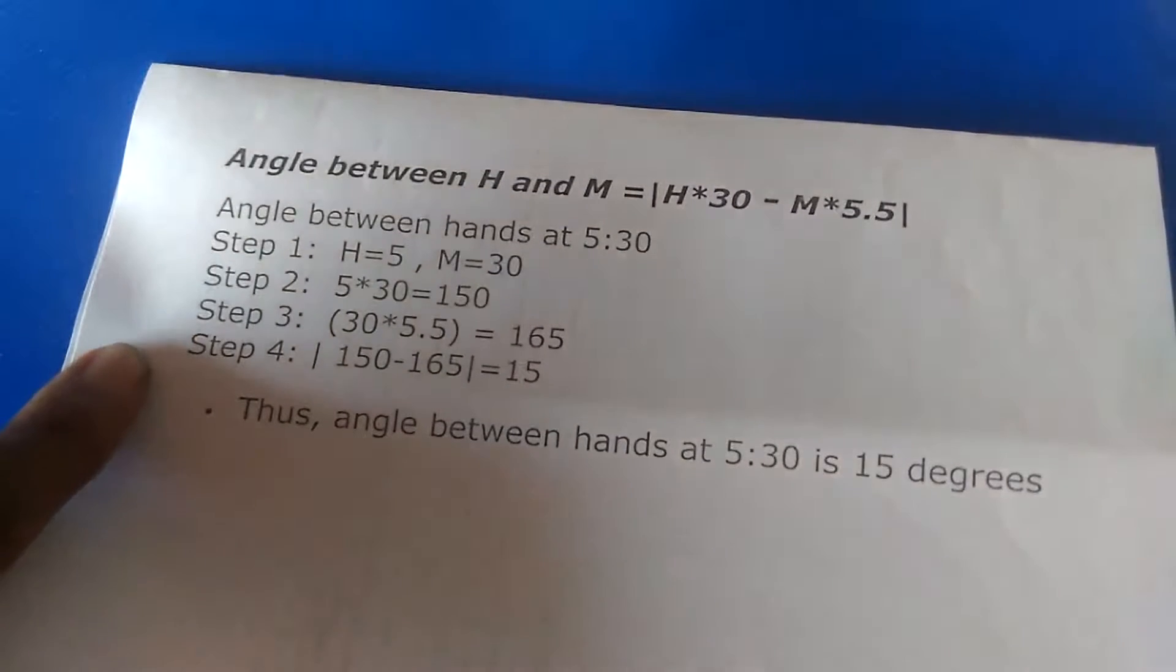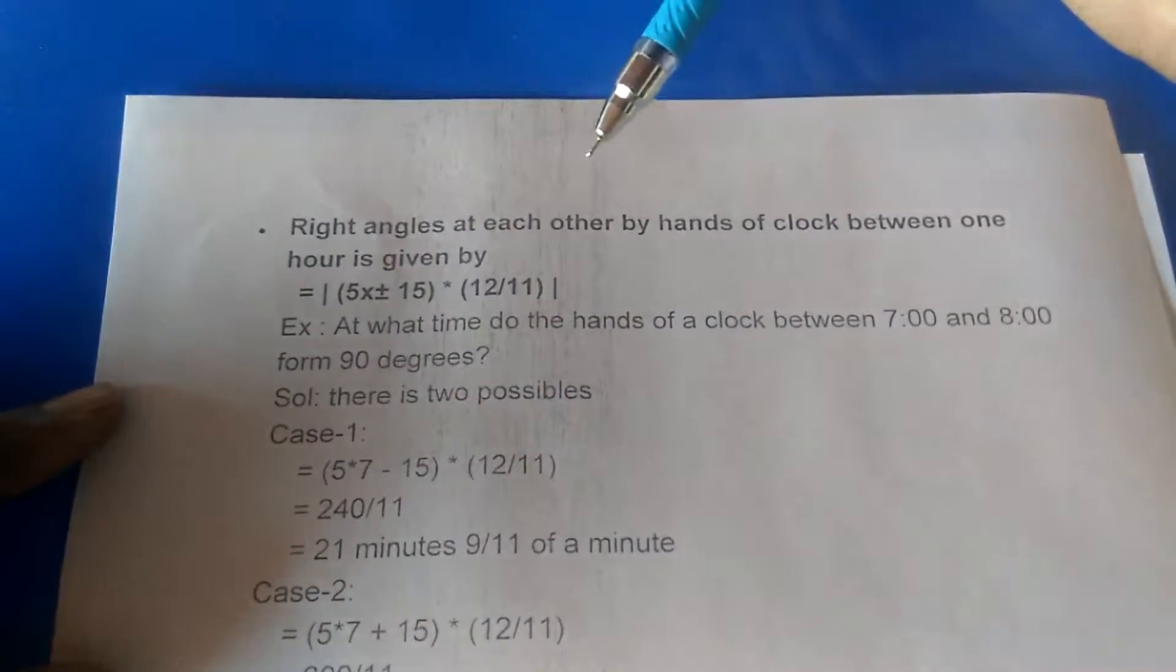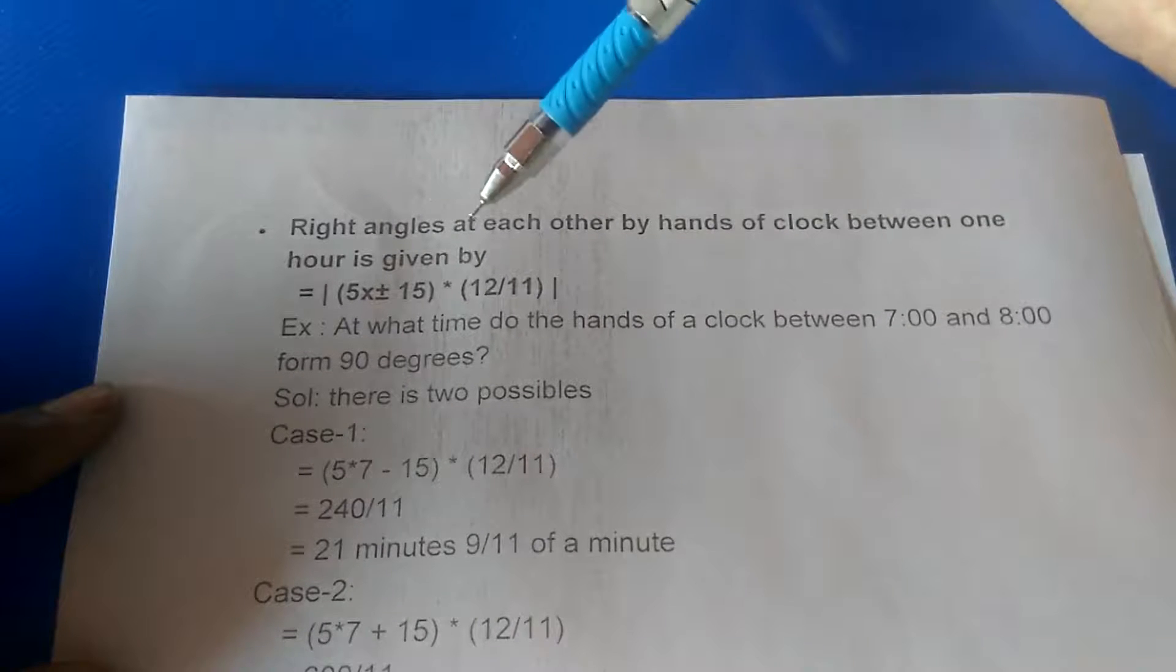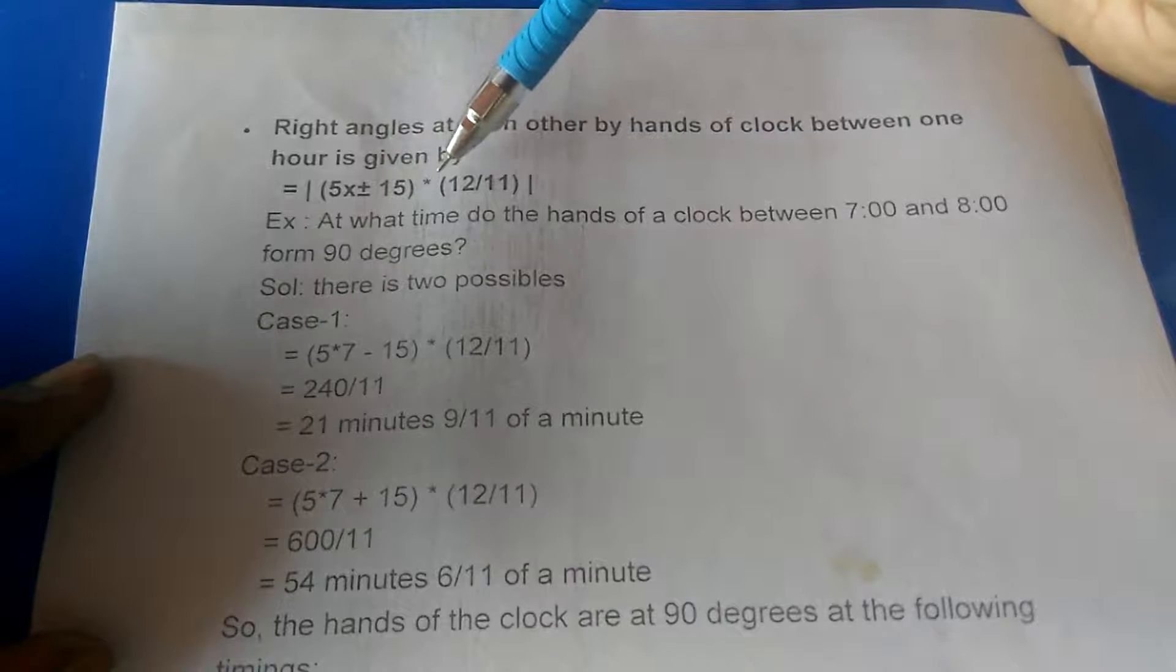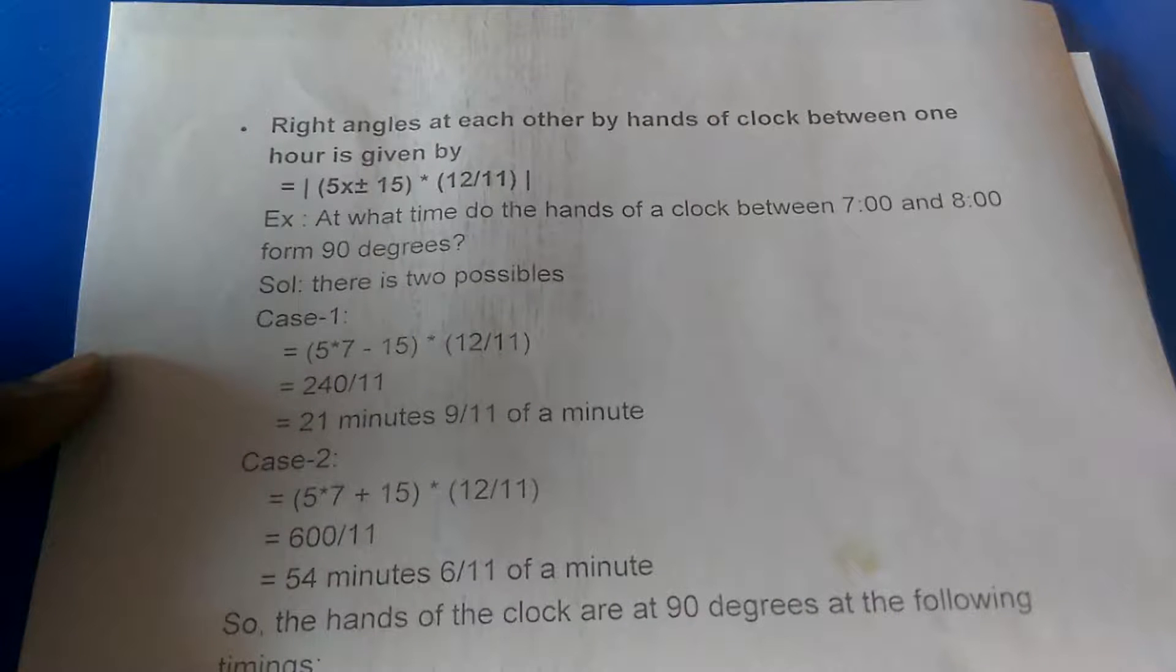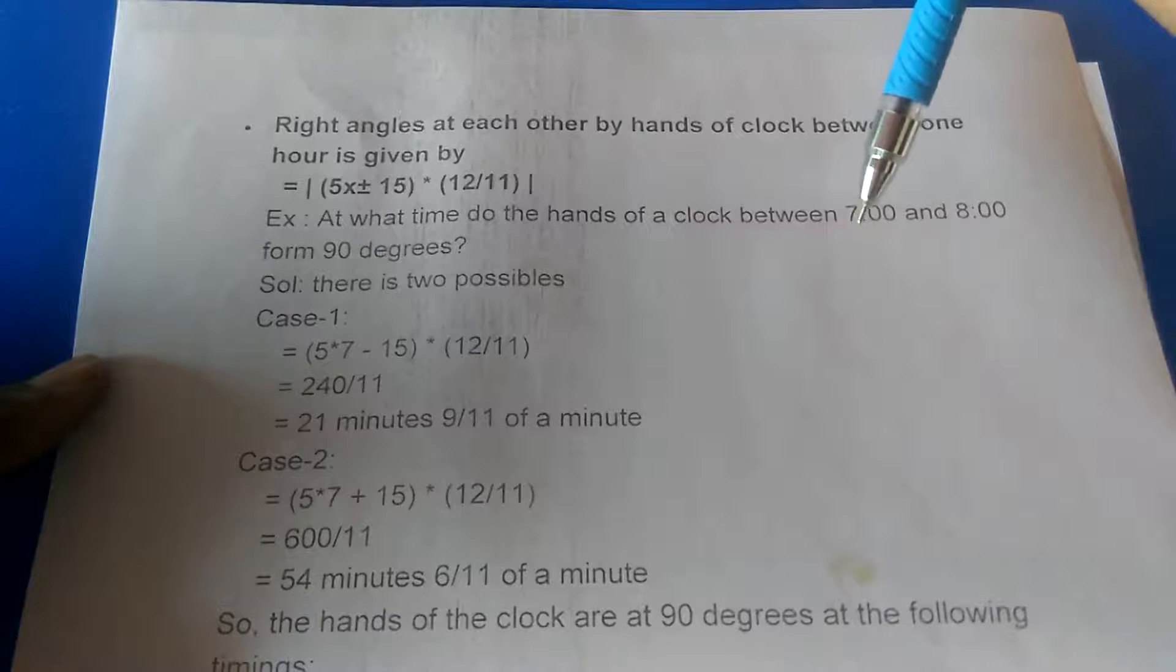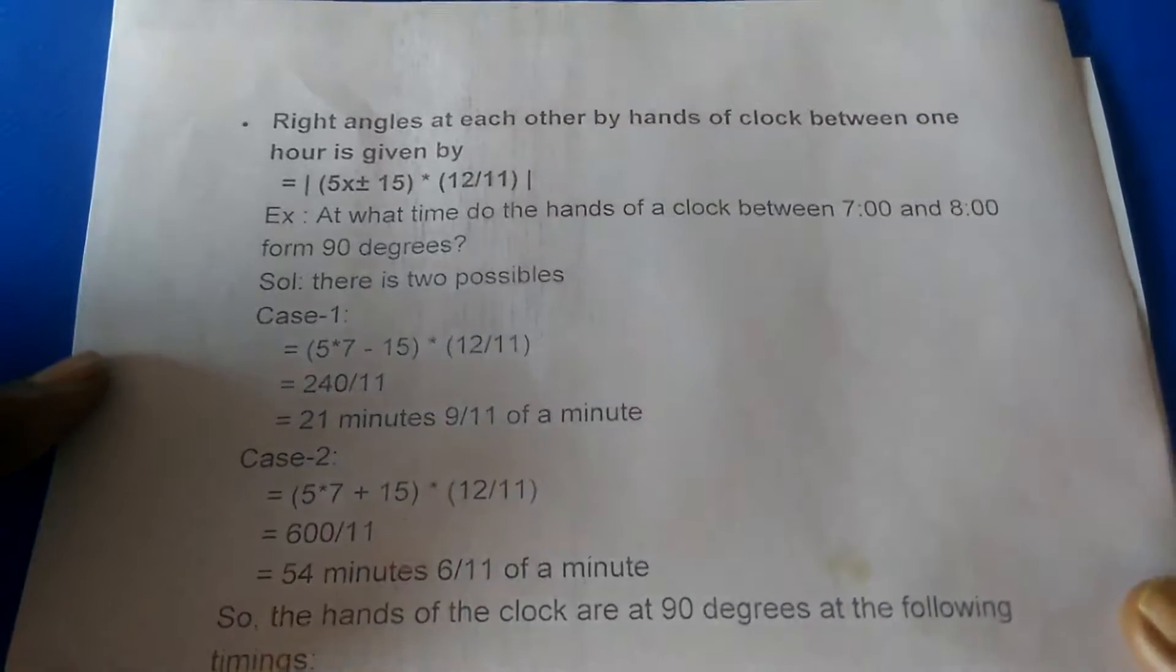One more trick: this is very useful to find the right angle at which hands of a clock are at each other between one hour. The formula is |5x plus or minus 15| times 12 over 11. For example, at what time do the hands of a clock between 7 and 8 form 90 degrees? So we have two possibilities.